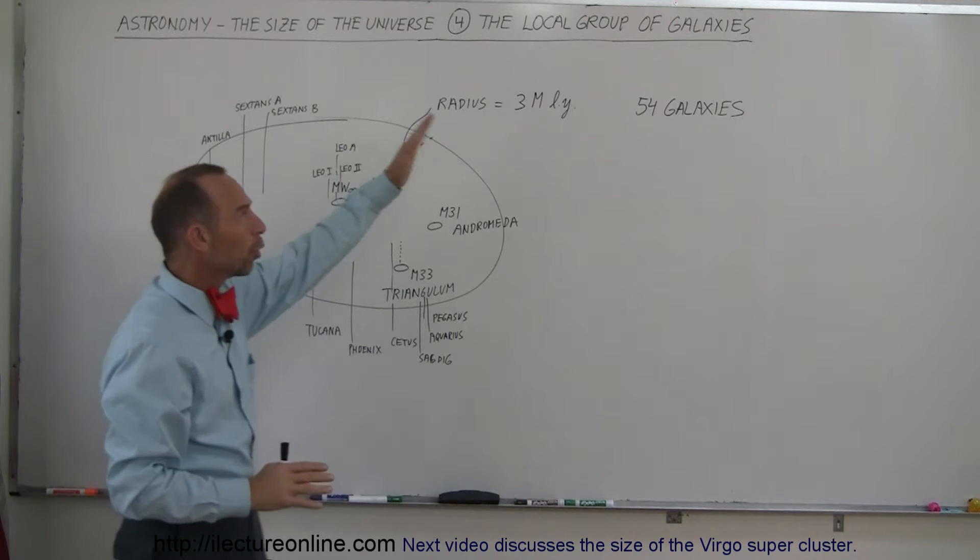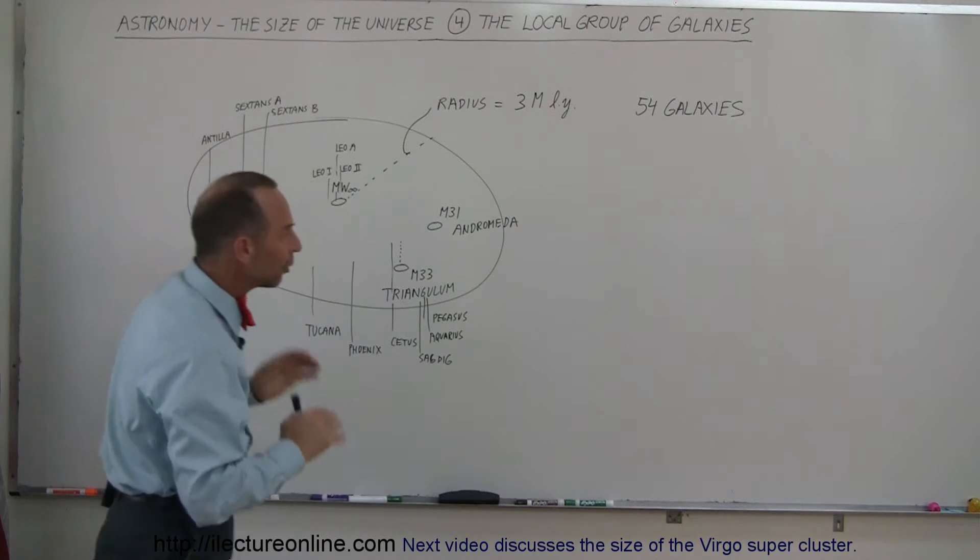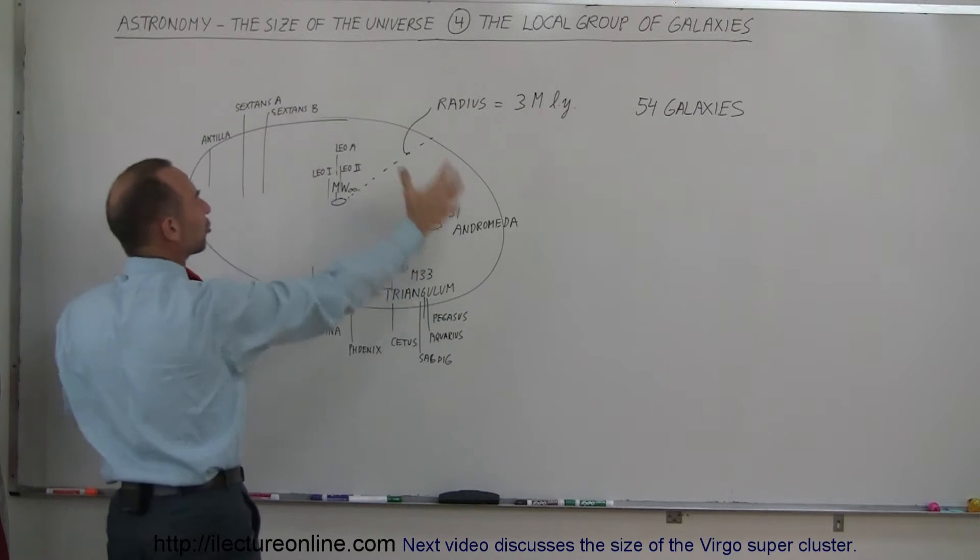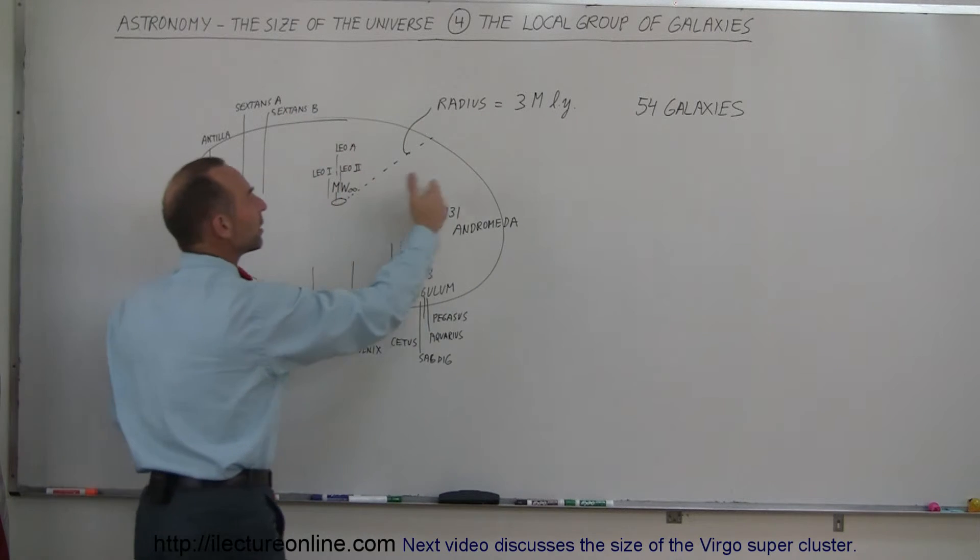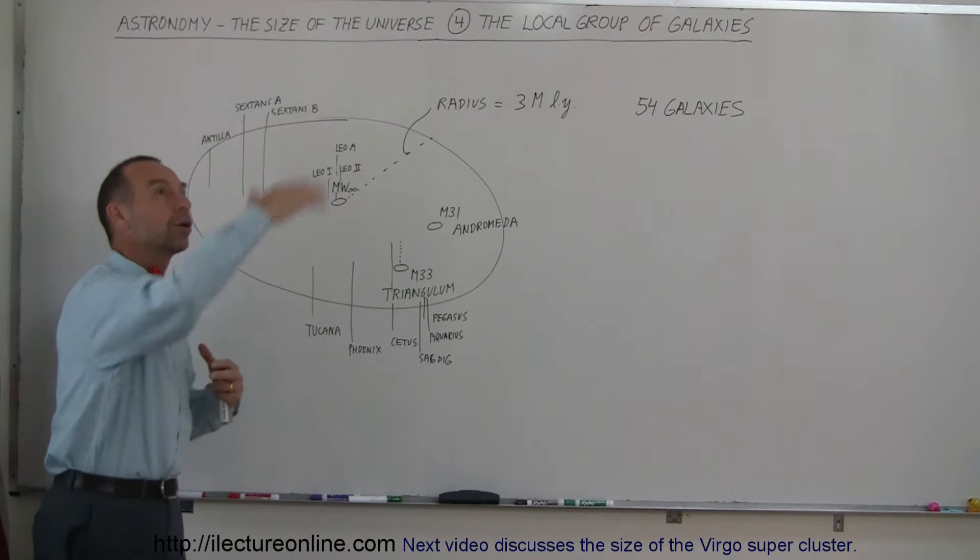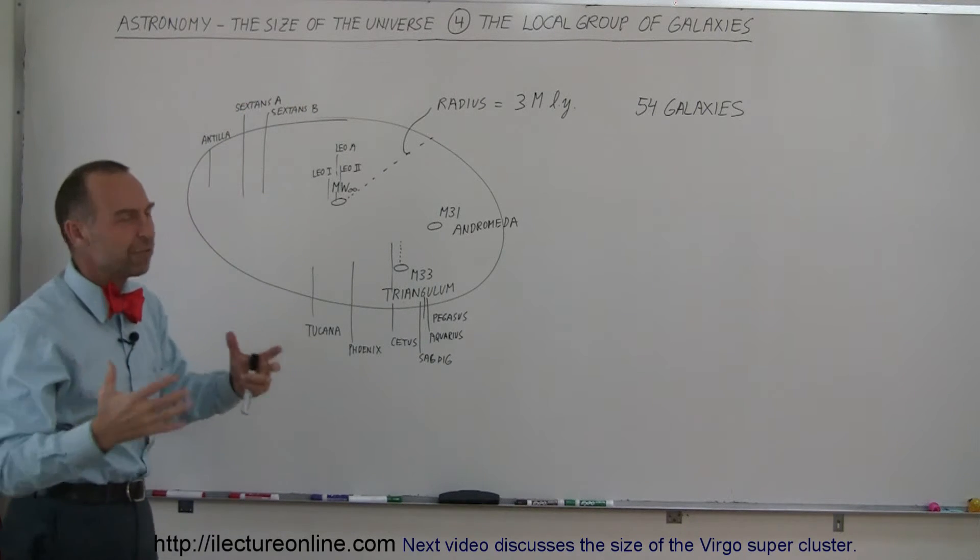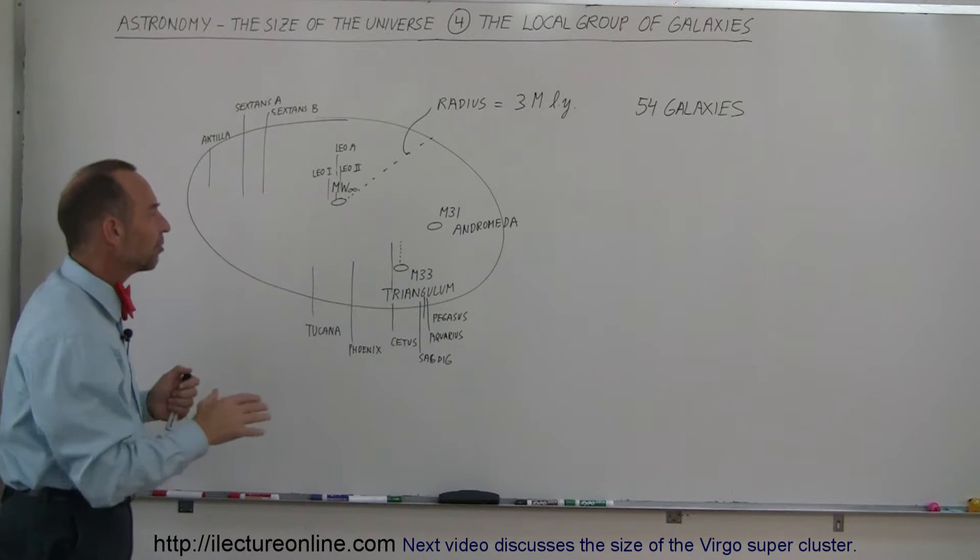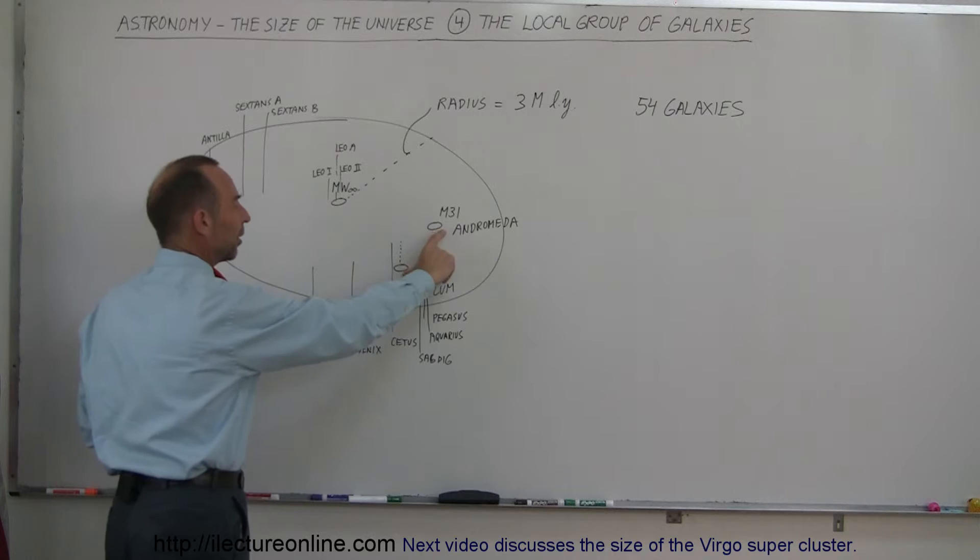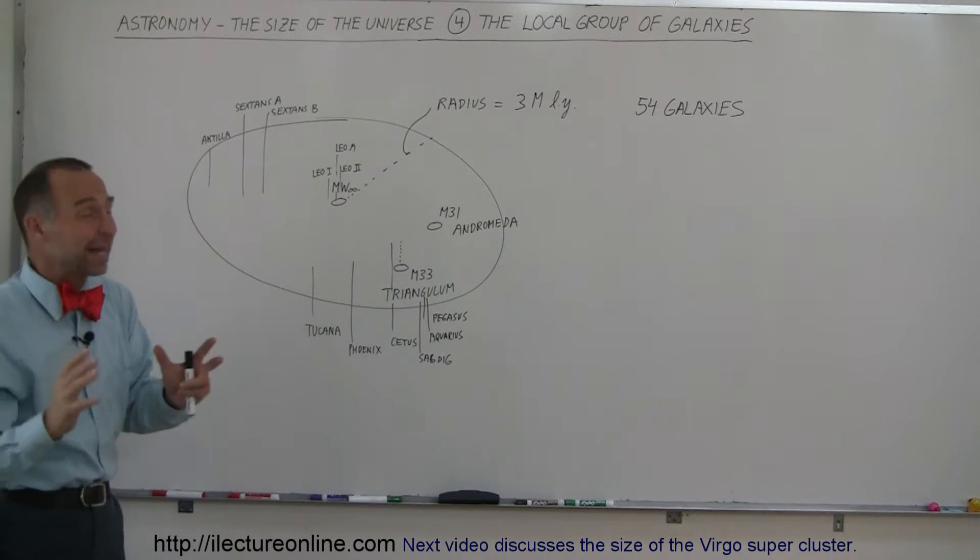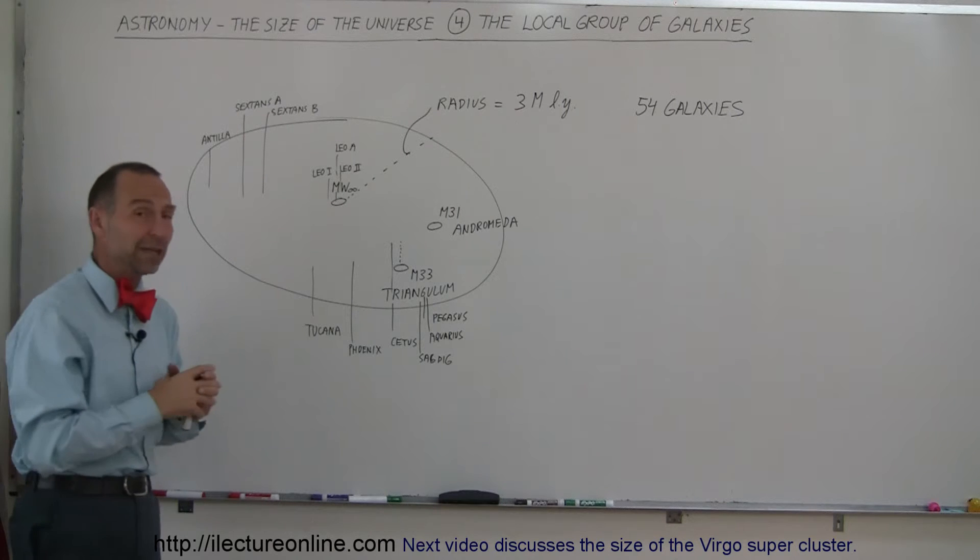We call it the local group of galaxies. The local group goes out in a spherical shell about 3 million light years away from us. So if we start from our own galaxy and look in all different directions about 3, 4, 5 million light years away, you will find a bunch of other galaxies. Two of them are very large and the others are what we call dwarf galaxies. Not all galaxies are as big as the one we live in.